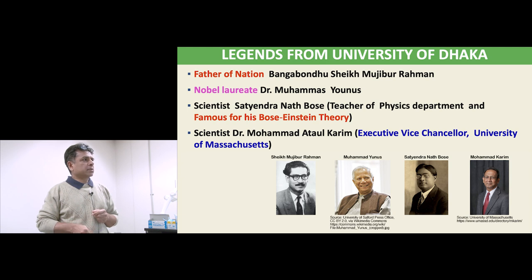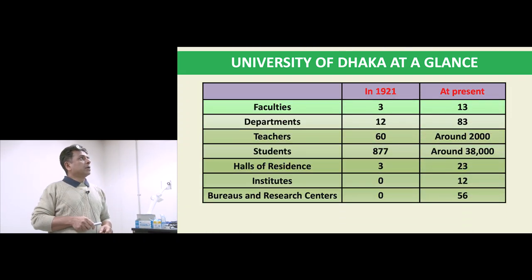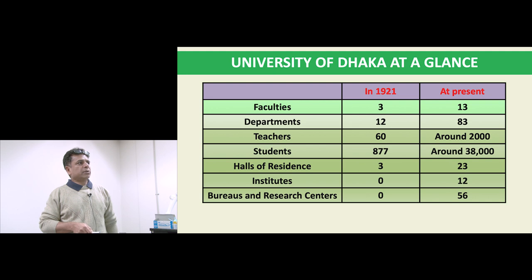Comparing the University of Dhaka from its founding in 1921 to the present: faculties grew from 3 to 13, departments from 12 to 83, teachers from 60 to around 2,000, students from 877 to around 38,000, halls of residence from 3 to 23, institutes from 0 to 12, and bureaus and research centers from 0 to 56.